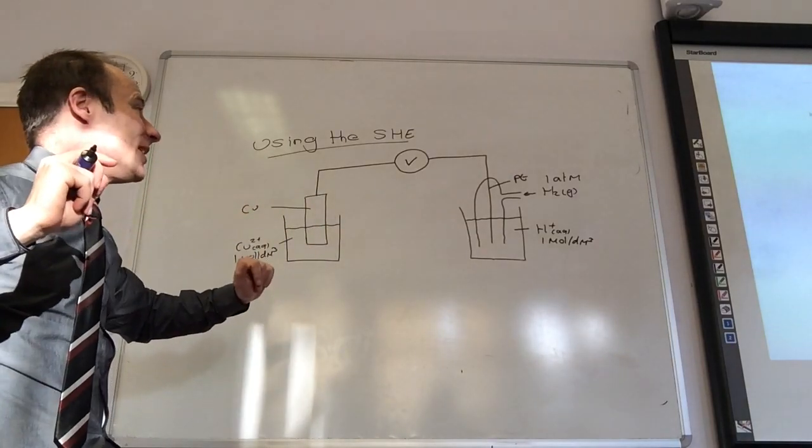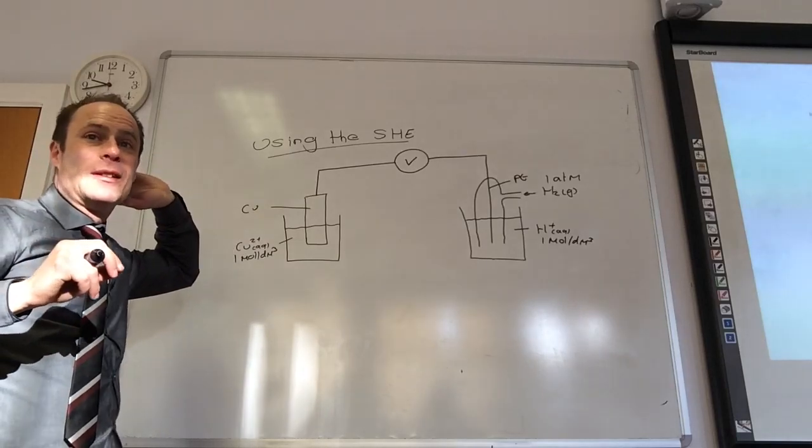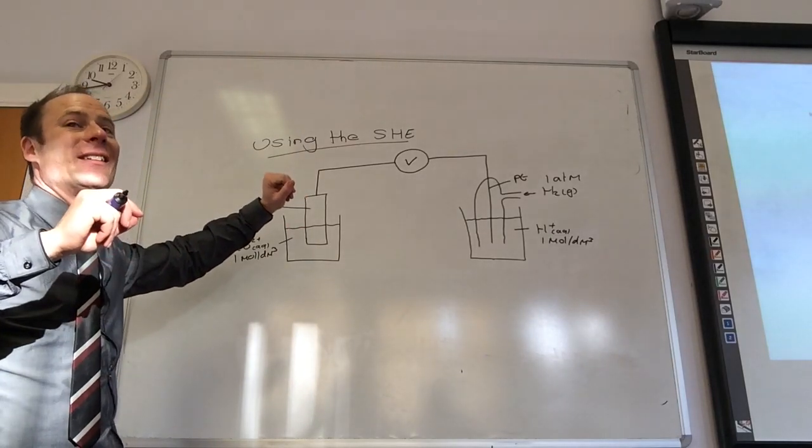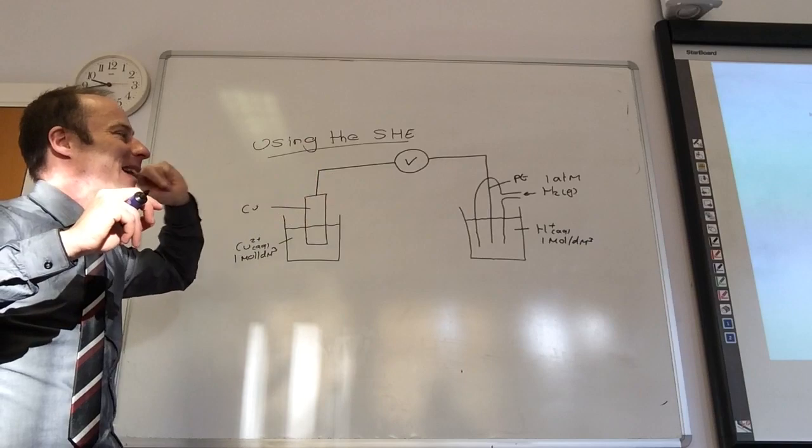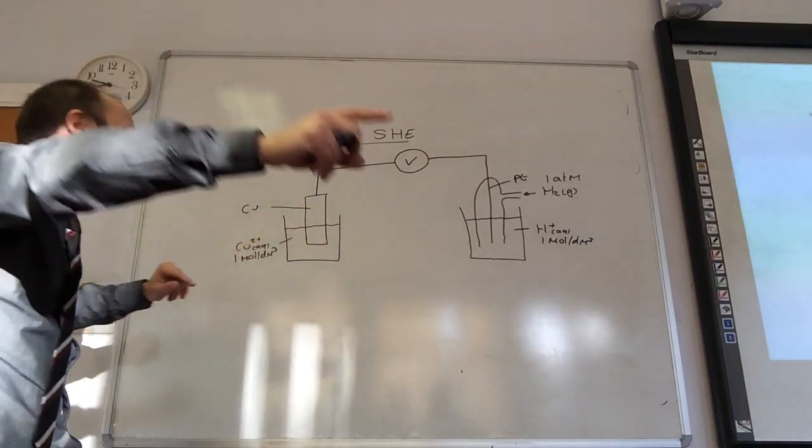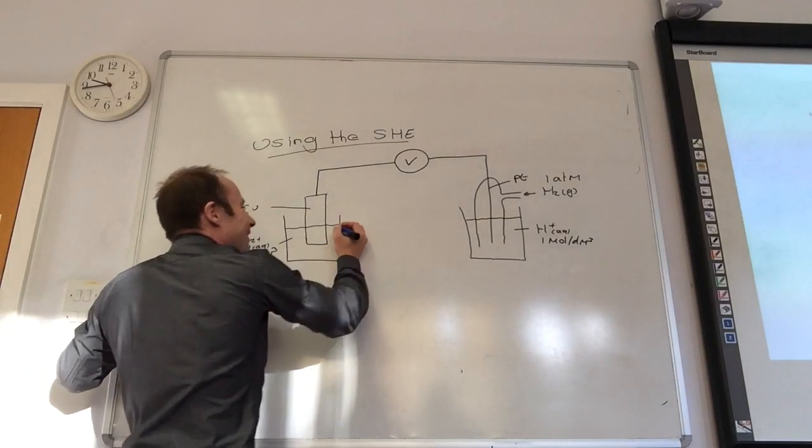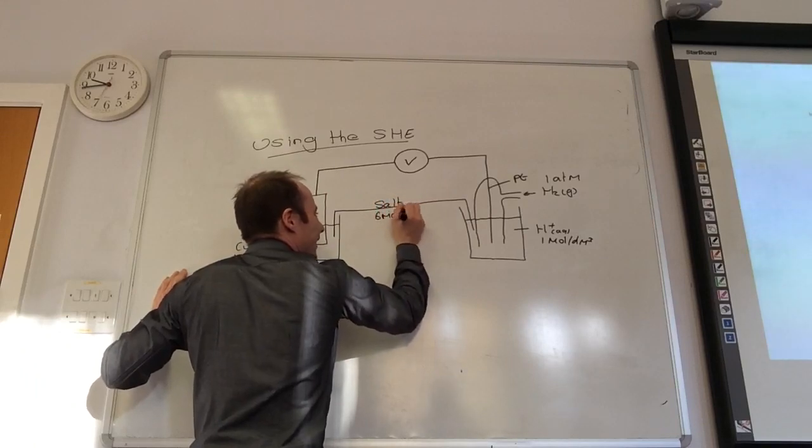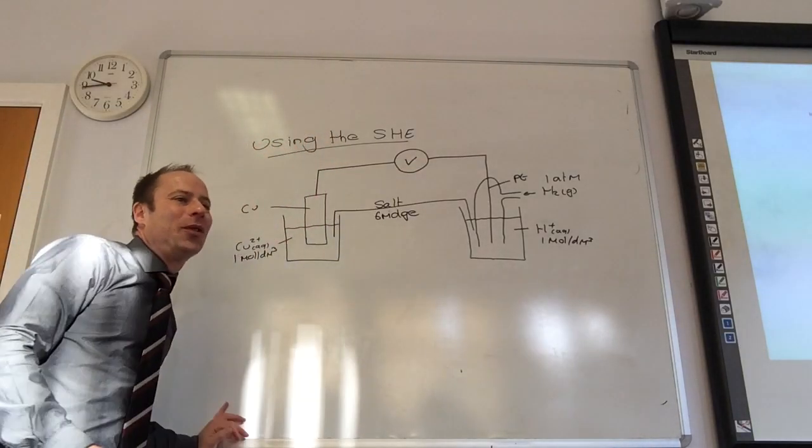Now will I see a reading on my voltmeter as it stands? No. Why not? What do you always need? Think back to GCSE. I do need electrons to flow, to have a complete circuit. So the way I do it is I connect these two up and this is called a salt bridge. Don't forget your salt bridge - you must see a complete circuit. If you don't, you will not see anything on that at all.